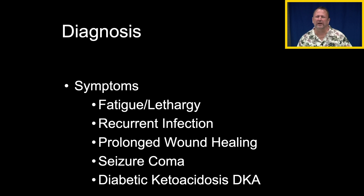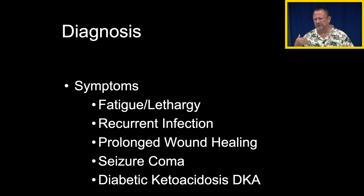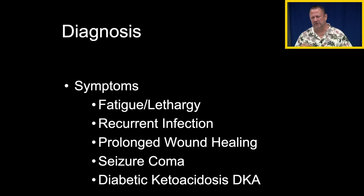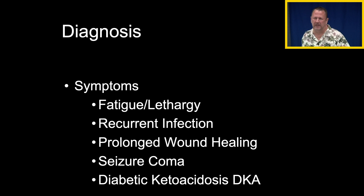Other symptoms include nonspecific ones like fatigue, lethargy, sleepiness, recurrent infection, and prolonged wound healing. Seizure and coma are also possible. Diabetic ketoacidosis is a very severe form of diabetes — the inside of the cells are starving and start releasing ketones, causing severe acid-base disturbance. By the time we see somebody with DKA, they've lost so much free water through osmotic diuresis that they're severely dehydrated as well.